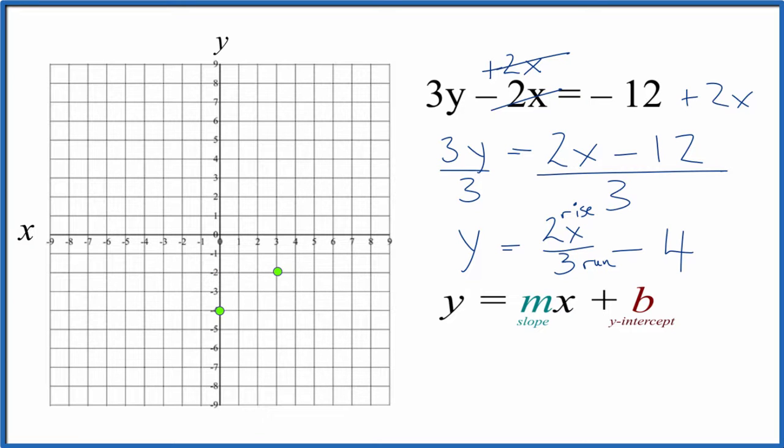Let's do another one. It's usually best to have three points. From this new point, we rise 1, 2, and run 1, 2, 3. You can see they're in a line. Let's put a line through those and add arrows to show it goes to infinity. That's the graph for 3y - 2x = -12.